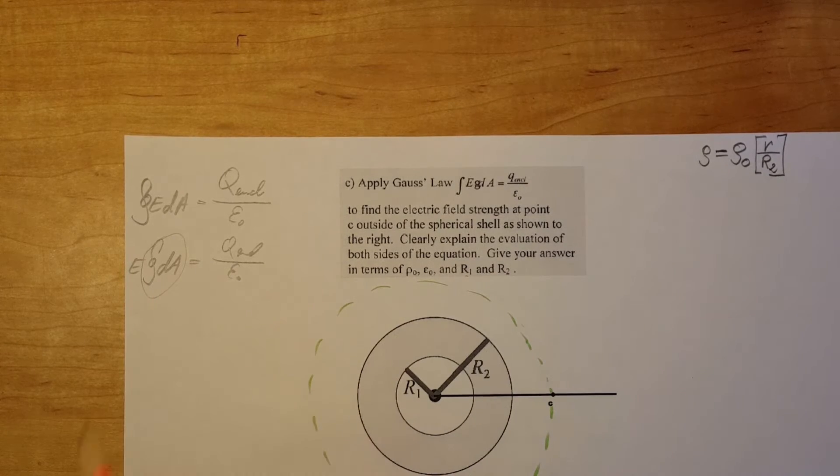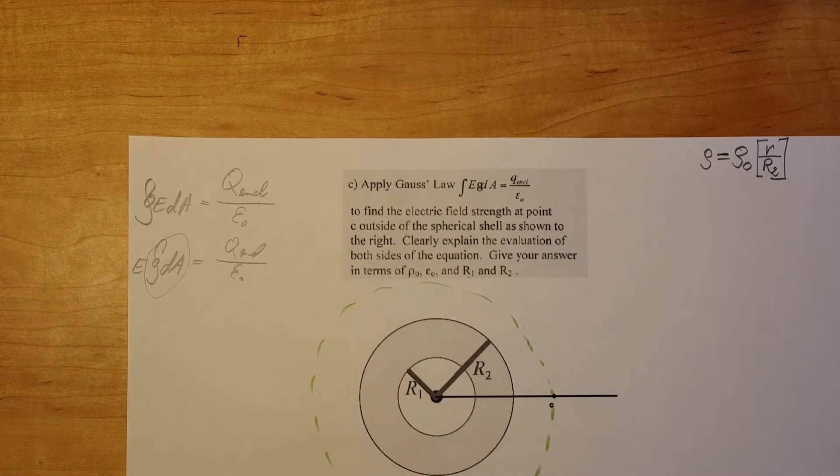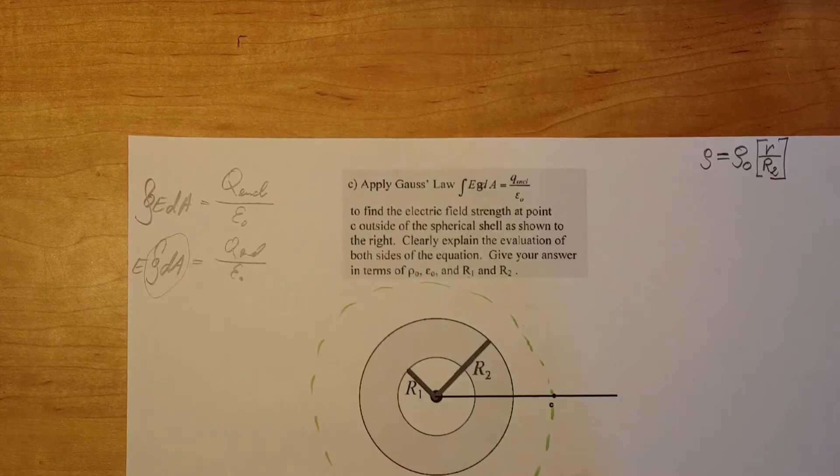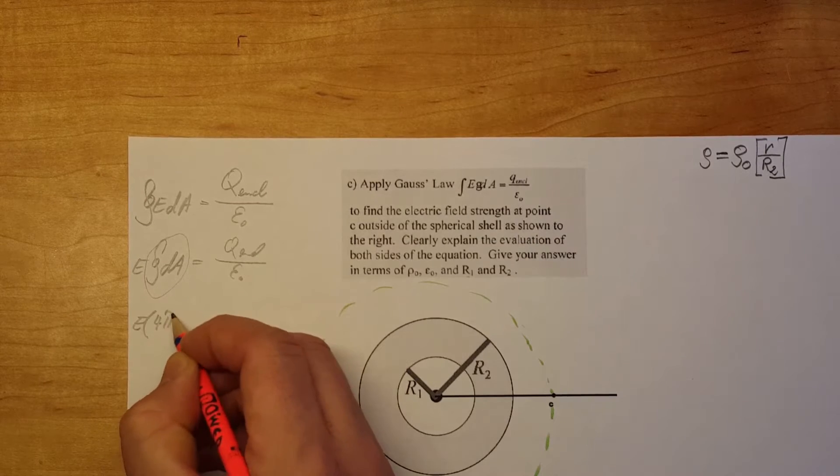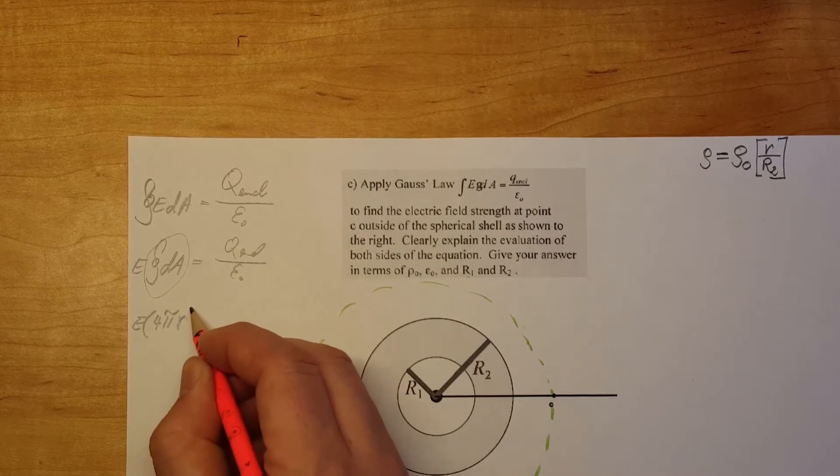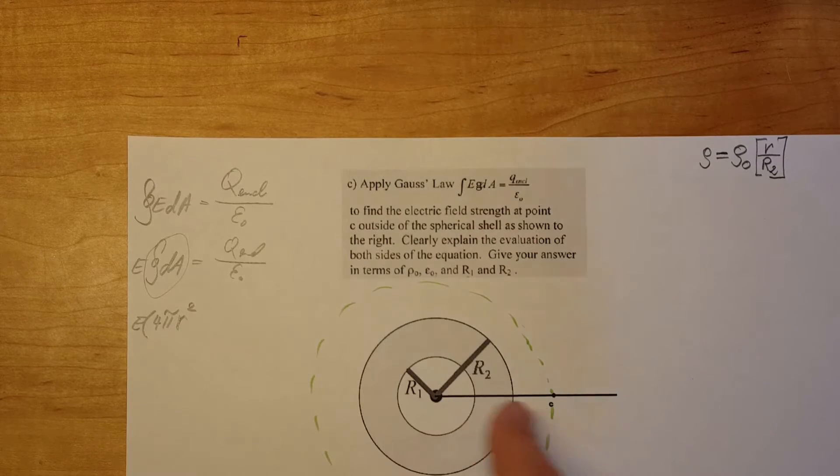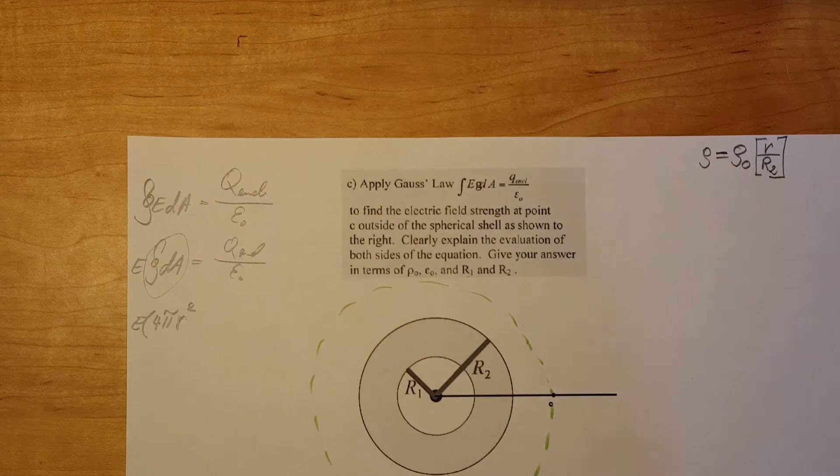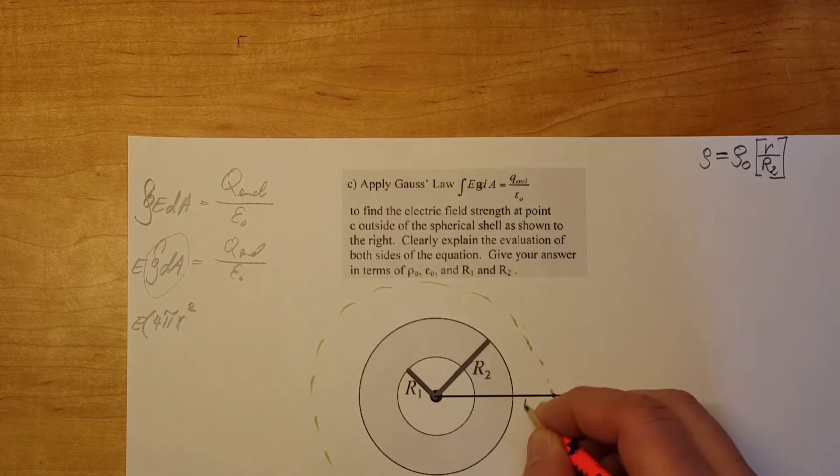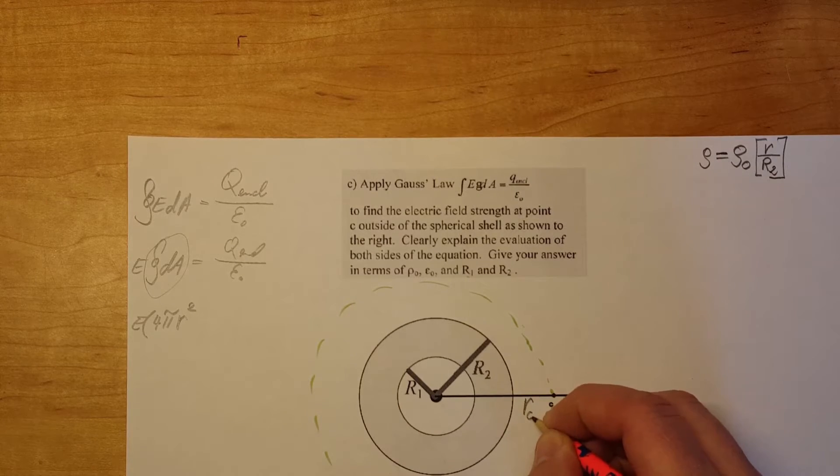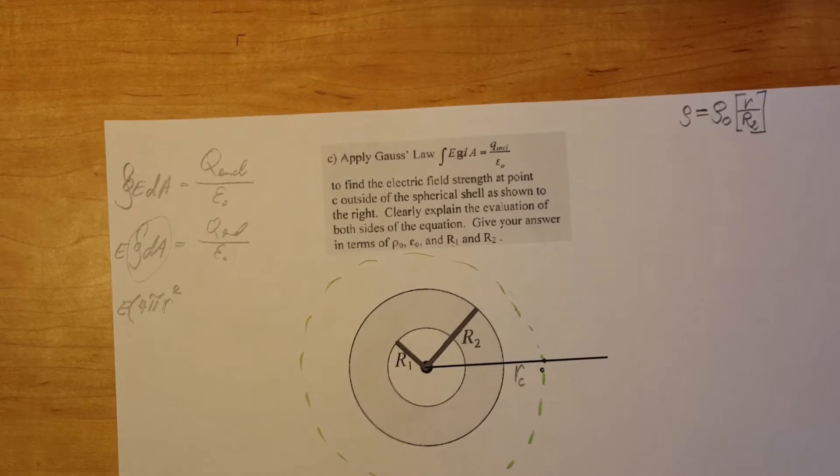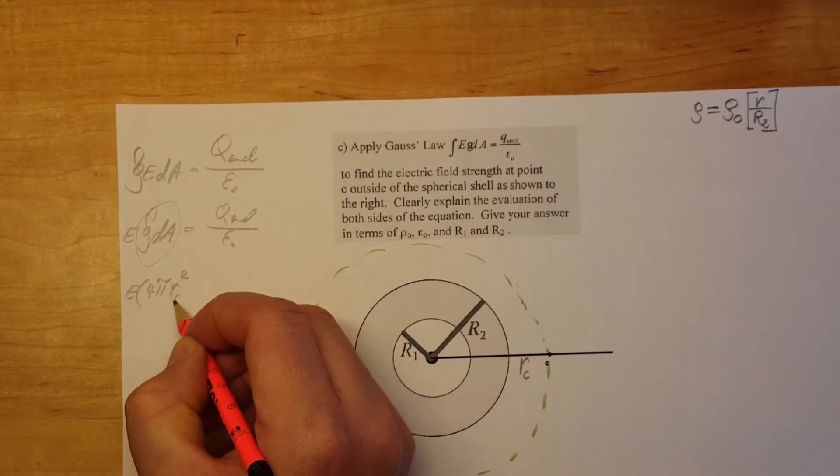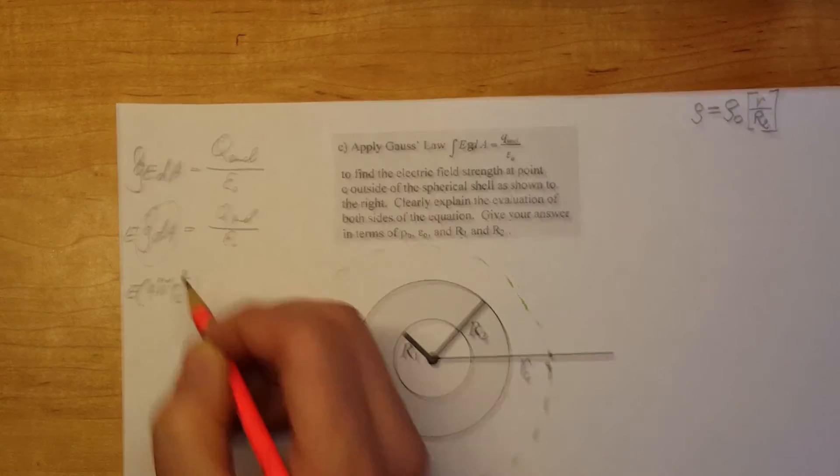Here's integral of our area which will be the surface area of a sphere. E times 4 pi r squared and this R is for our Gaussian surface which we will call small r and an index c for our point c. So we'll put that little c here to the square.